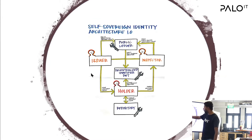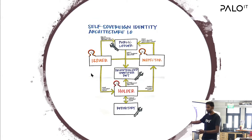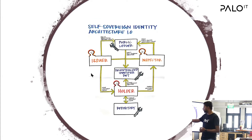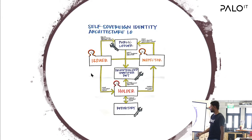One more important concept: decentralized identifiers (DIDs). This is a digital ID stored on the public ledger, and the ID is unique between each connection. If I connect to government agency one, my connection ID with them is different from my ID with another government agency. This means people cannot correlate our data or form user behavior profiles based on it.